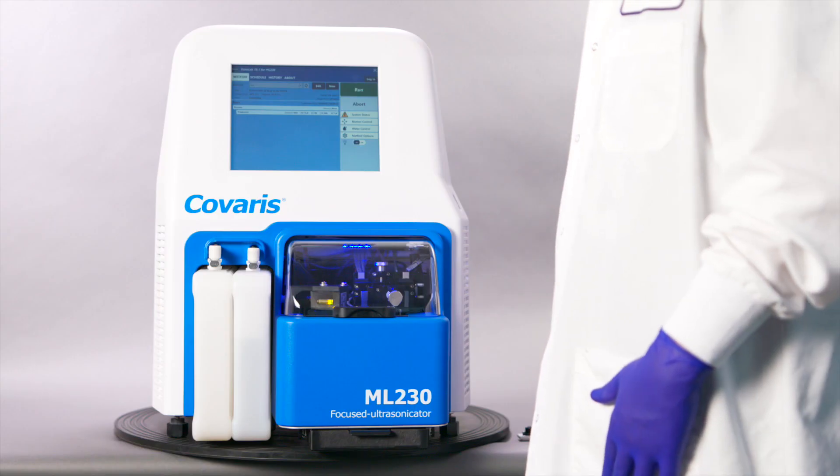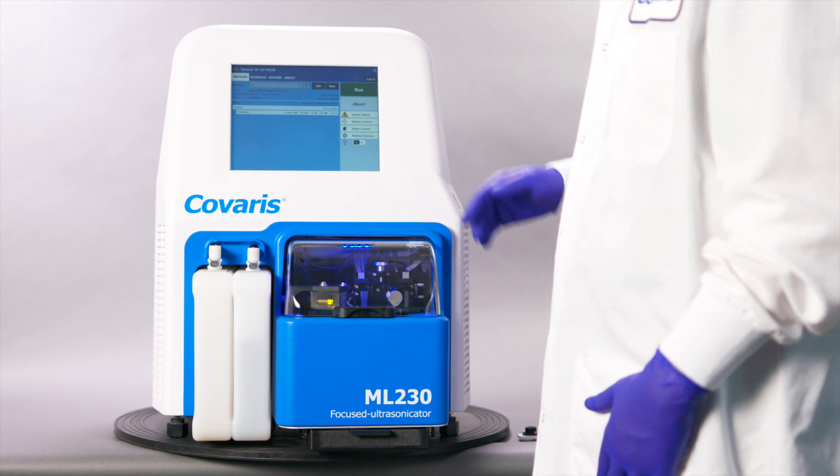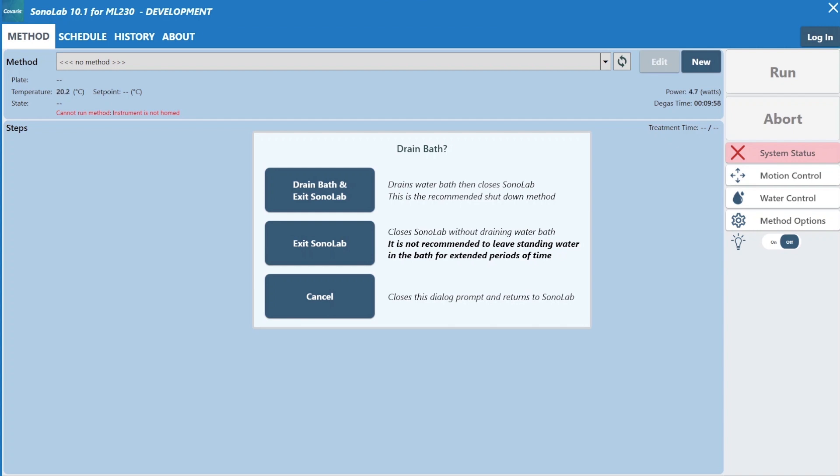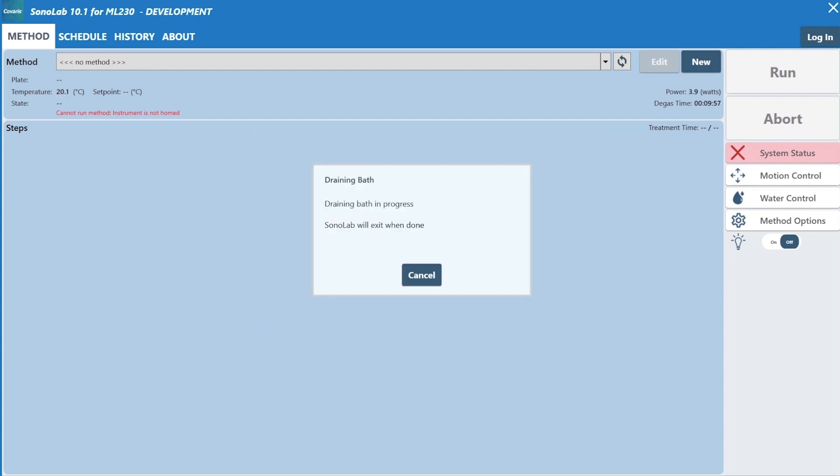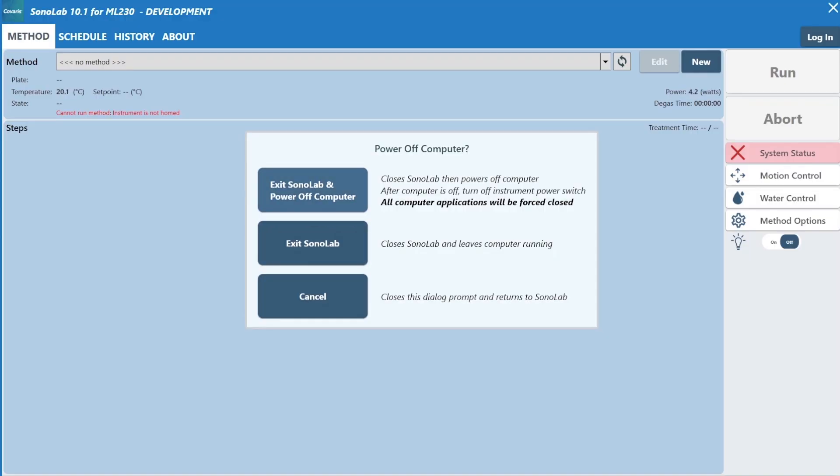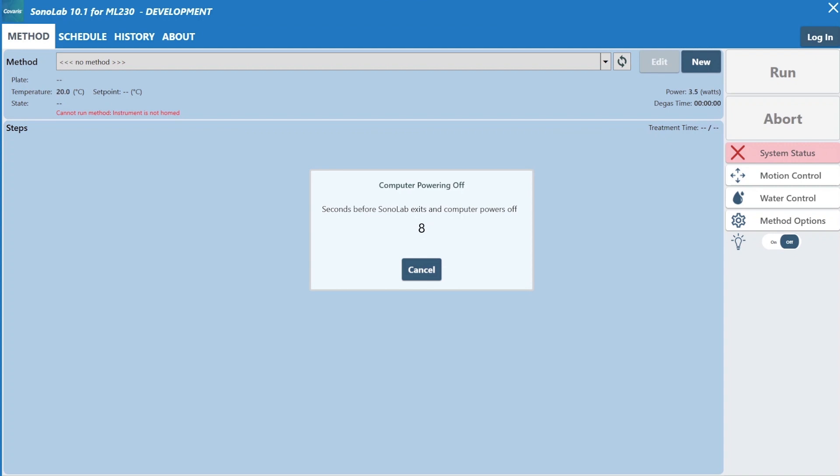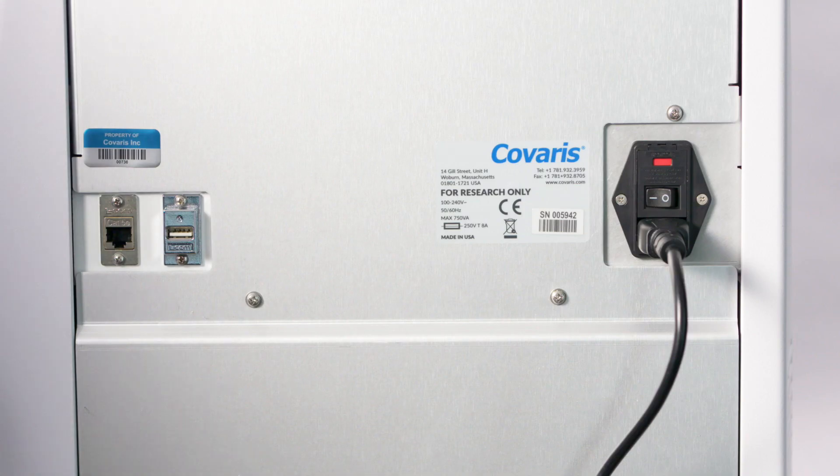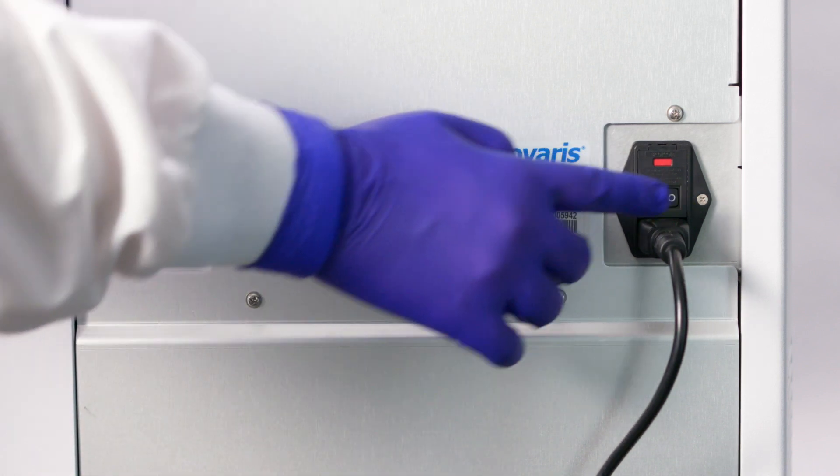To properly shut down the ML-230, exit the Sonolab program. This will also prompt you to empty the water bath. Press Drain Bath and exit Sonolab. This will prompt a message letting you know the bath is draining. Once the bath has finished draining, a new window will appear and you can select the option to exit Sonolab and power off computer. Once the operating system has been shut down, users can turn off the ML-230 by moving the power switch to the off position.